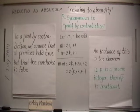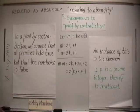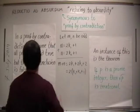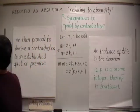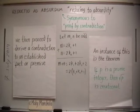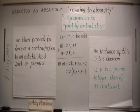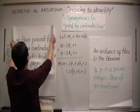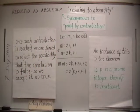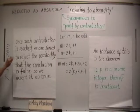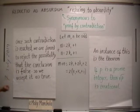In a proof by contradiction, we assume that all premises hold true but that the conclusion is false. We then proceed to derive a contradiction to an established fact or premise. Once such a contradiction is reached, we are forced to reject the possibility that the conclusion is false, so we accept it as true.